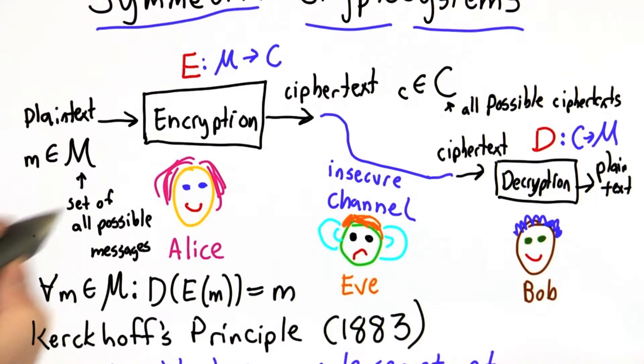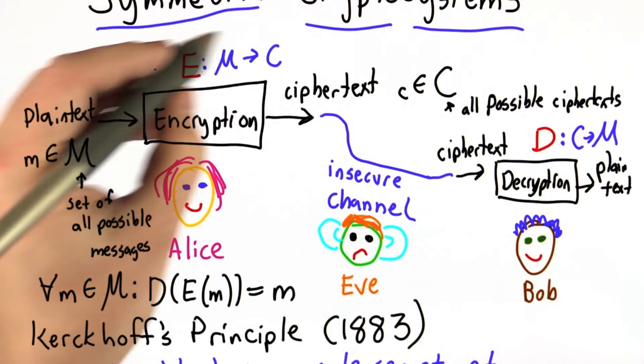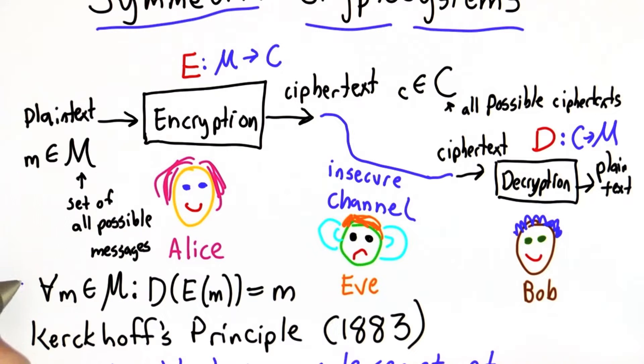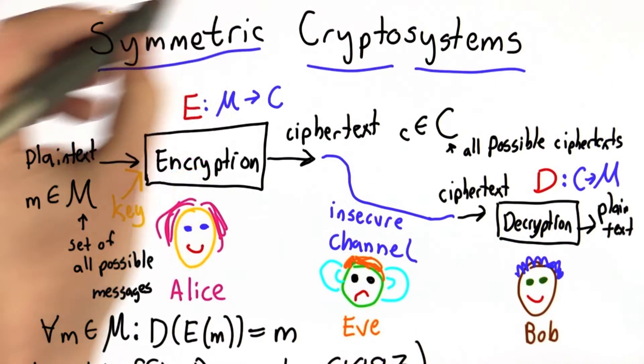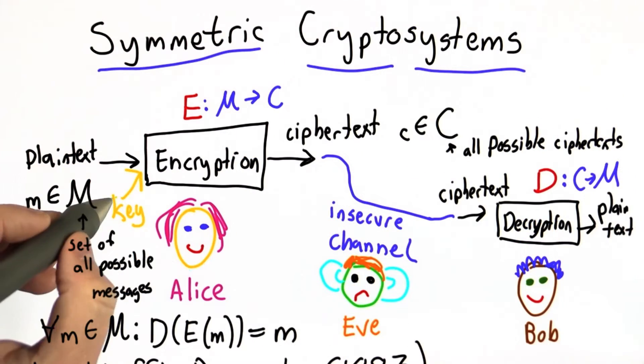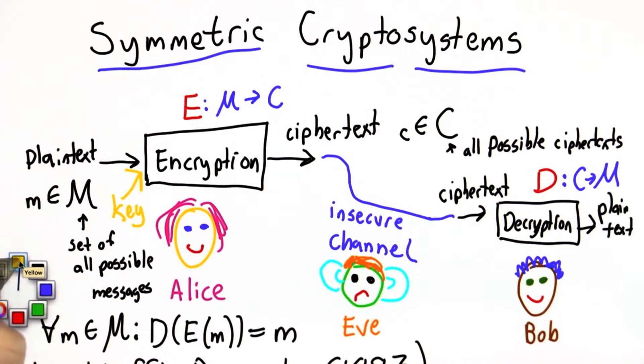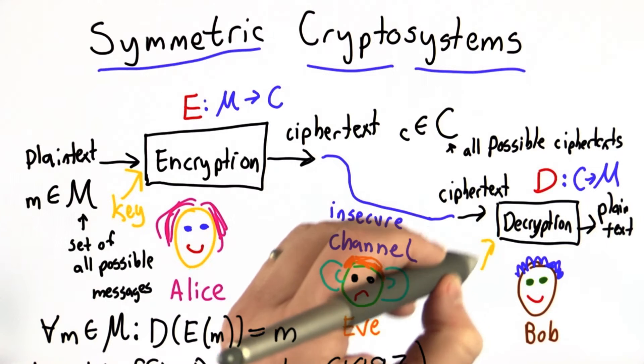What you want is some way that even if your encryption and decryption functions are known, your cipher can still be secure. And the way to achieve that is to use a key. So instead of just having the message as input to the encryption function, the other input to the encryption function is a key. And if it's a symmetric cryptosystem, that same key is the key that is needed in the decryption function as well.